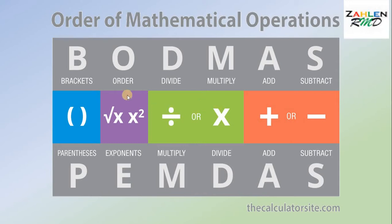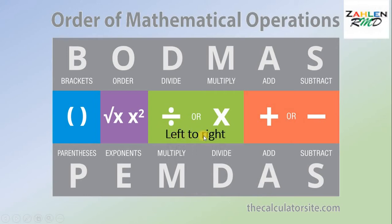So we will use BODMAS and PEMDAS. First, we do the parentheses — all operations inside the parentheses. Next, we do exponents, like squared and radical signs. For division and multiplication, we do this operation from left to right. As well as addition or subtraction — from left to right.